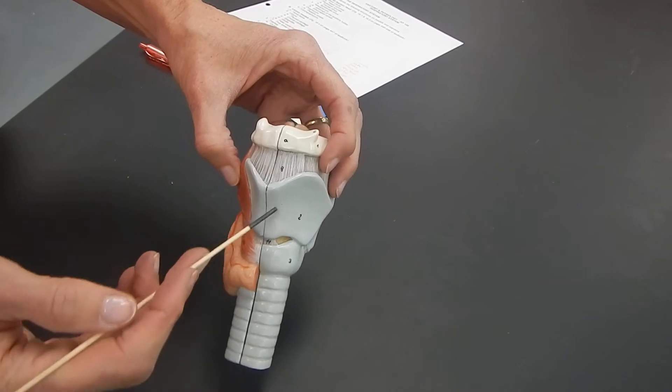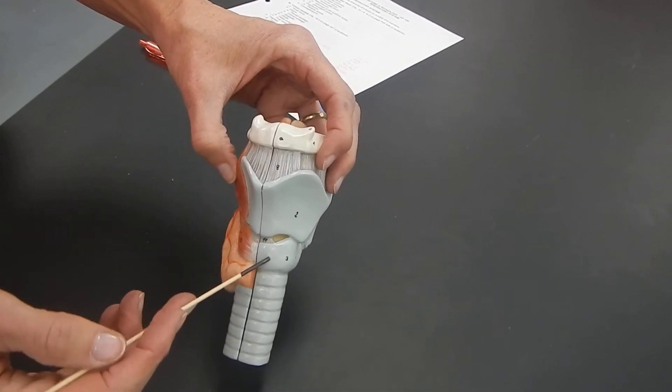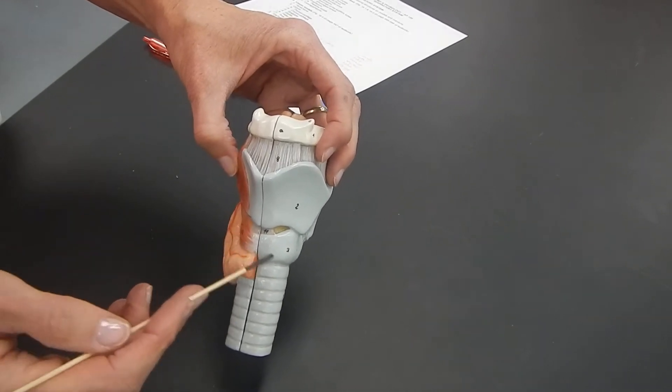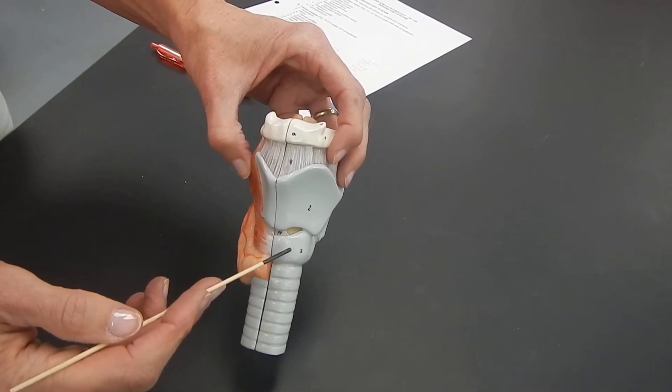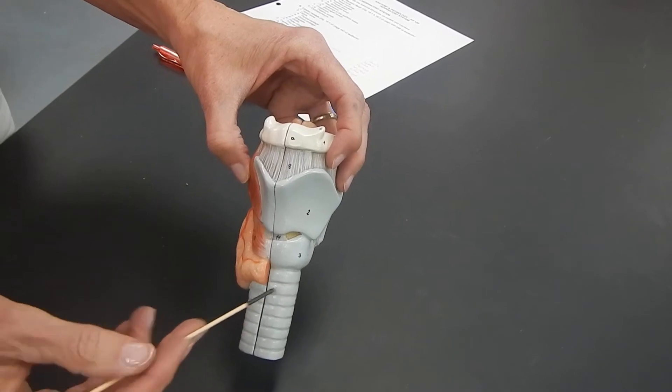The thyroid cartilage is superior to this cartilage, which is called the cricoid cartilage. The cricoid cartilage attaches the larynx to the trachea.